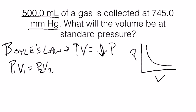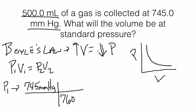So the initial pressure is 745 millimeters mercury, so we need to convert that into atmospheres. 745 millimeters mercury divided by the conversion factor, 760 millimeters mercury per unit of atmosphere. 745 divided by 760 is 0.980 atmospheres.